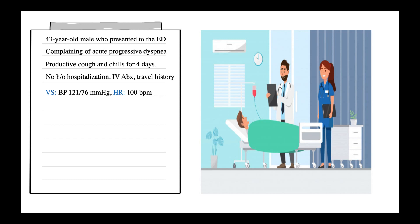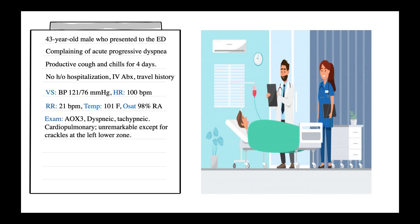Heart rate was 100 beats per minute. Respiratory rate was 21 breaths per minute. The patient was febrile with a temperature of 101 Fahrenheit. Oxygen saturation on room air was 98%. On general exam, the patient was alert and oriented. He was mildly dyspneic and tachypneic, but he wasn't in acute distress, and he didn't require any oxygen supplementation. His cardiac exam was unremarkable.